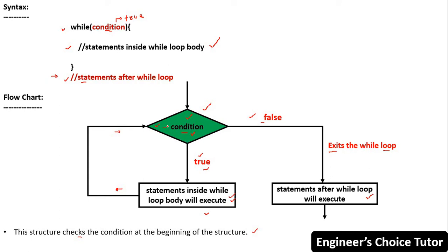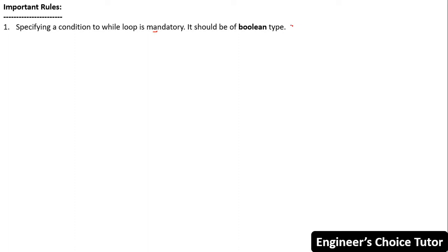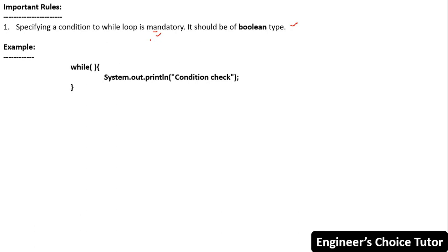Now let's discuss the important rules for while loop. The first rule is that providing a condition to while loop is mandatory, and it should be of boolean type. If you do not provide a condition to while loop, you will get a compile-time error saying 'illegal start of expression'.